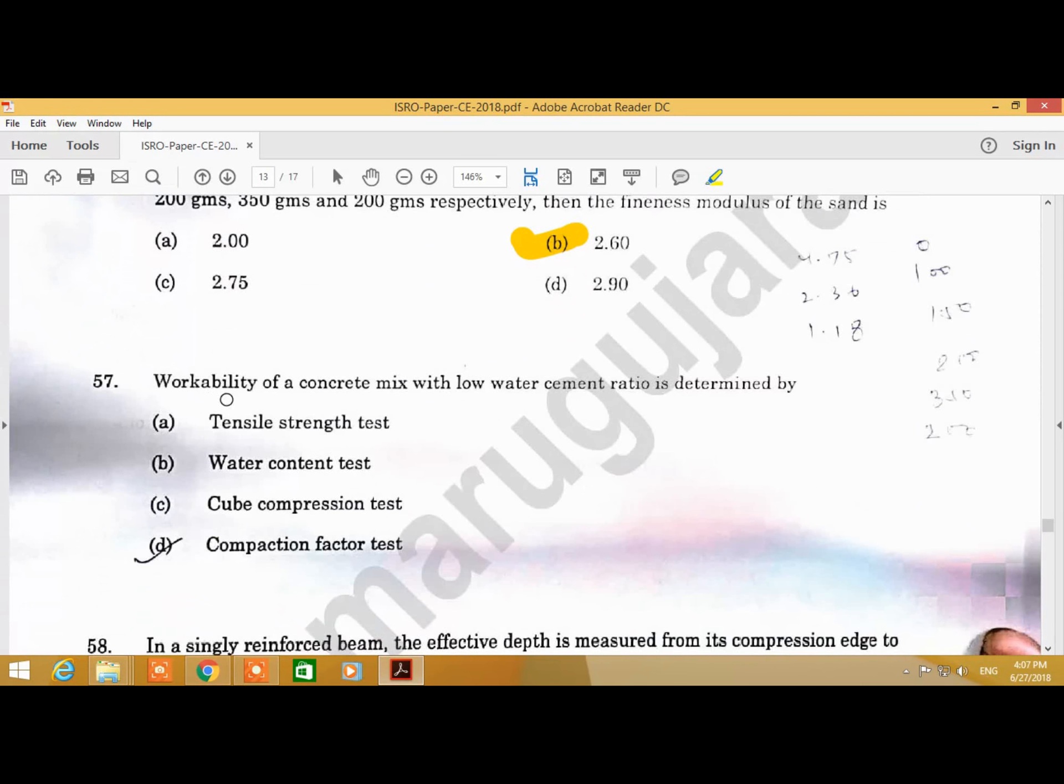Question Number 57: The workability of concrete mix with low water cement ratio is determined by. Answer is D, compaction factor test.